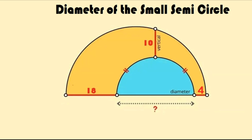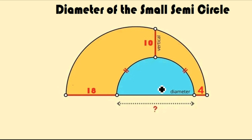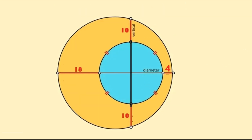Welcome back viewers. How do we determine the diameter of the small semicircle? The small semicircle is the blue region. The best way to determine this diameter is to make this figure a complete circle by flipping it vertically.